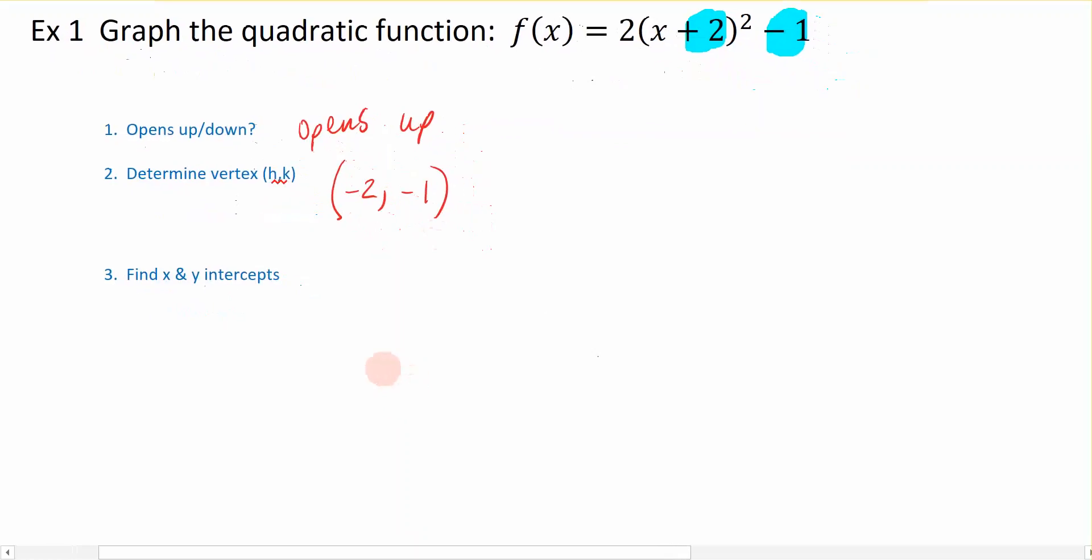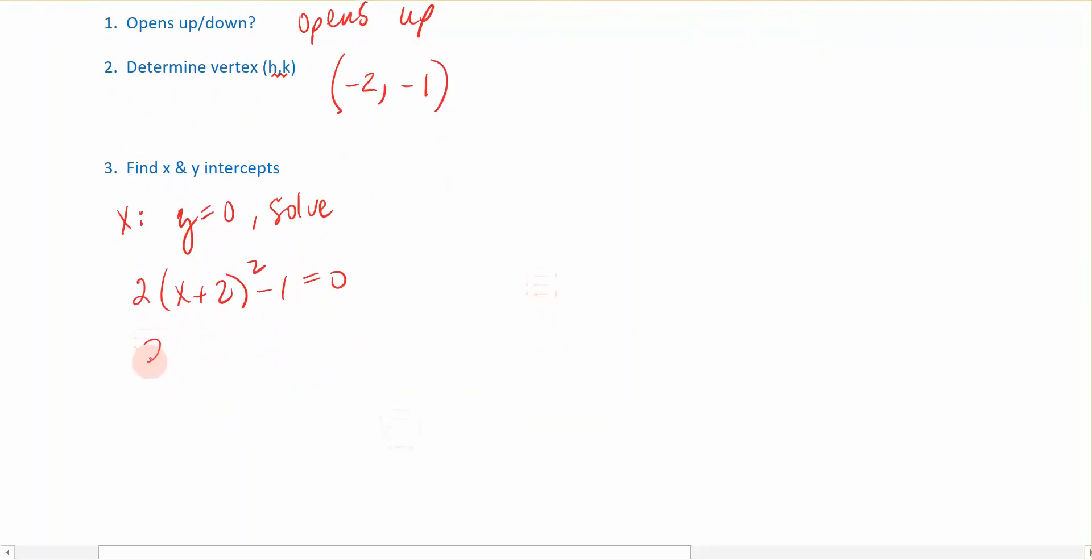The next thing I want to look at is I want to find the x and the y intercepts if they exist for this function. So we're going to start with the x-intercept. To find the x-intercept, we're going to set the function equal to 0 and then solve for x. Because that gives me the places, those are the roots, those are the solutions, and that's where it crosses the x-axis. So when I solve this equation, 2 times (x + 2) squared minus 1 equals 0. To solve this equation, we add 1 to the right-hand side. So this is 2 times (x + 2) squared equals 1. I'm going to divide both sides by 2, and I get (x + 2) squared is 1/2.